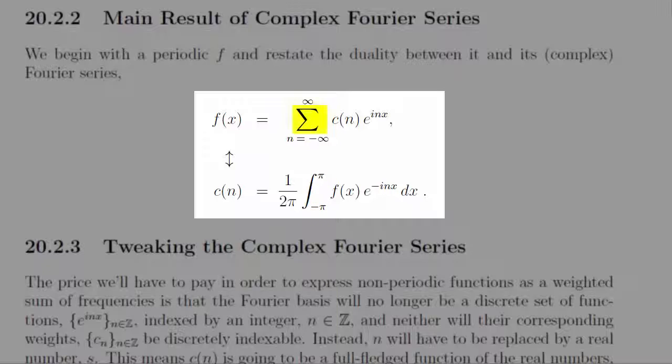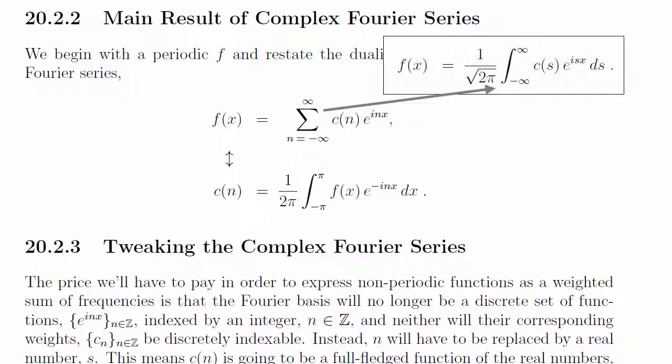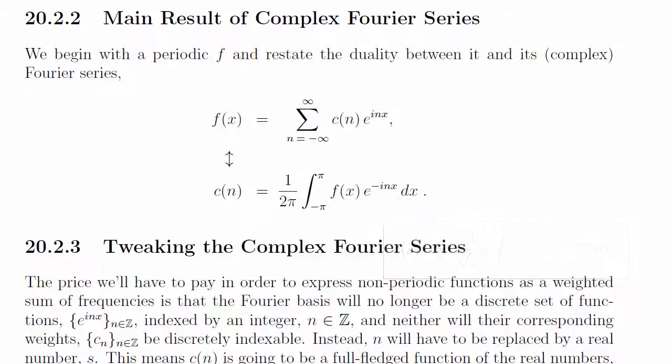Then, divide the real axis into smaller and smaller delta x intervals. The net result is that the sum becomes an integral as delta x approaches zero, and the limits of integration become minus infinity to plus infinity as we stretch the fundamental interval to cover the entire real line.